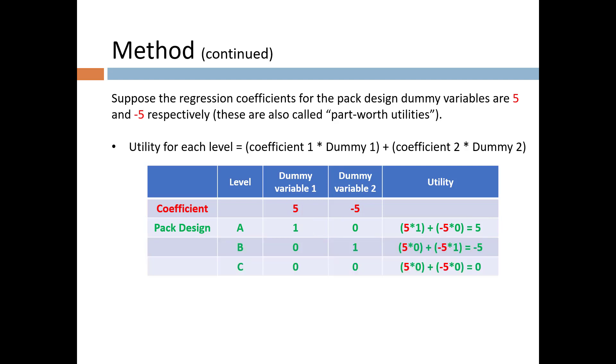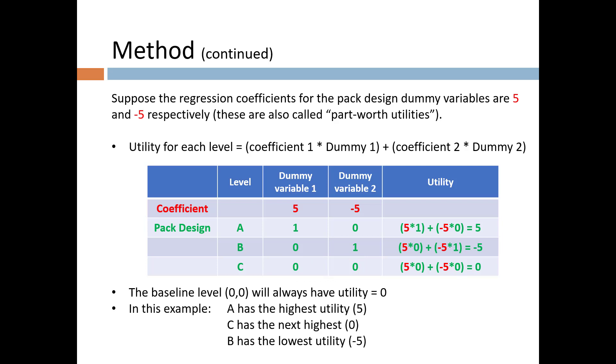Similarly, for pack design B, the utility is calculated as -5, and for C, because the dummy variable values are both 0, the utility is 0. This does not mean that design C has no value to the consumer. The baseline level, 0,0, will always have utility equal to 0. The utility values only have meaning relative to each other, not in an absolute sense. So in this example, design C has lower value than A, but higher than B.